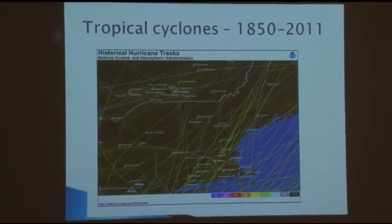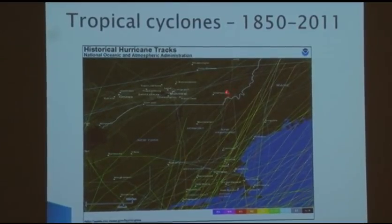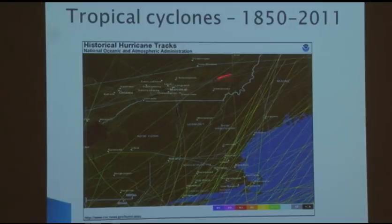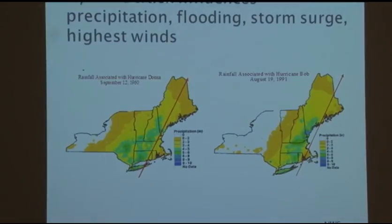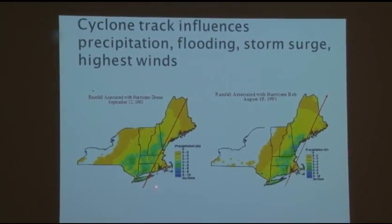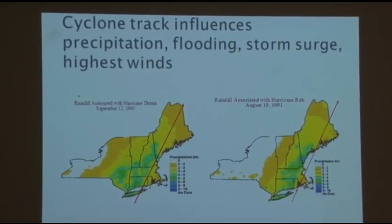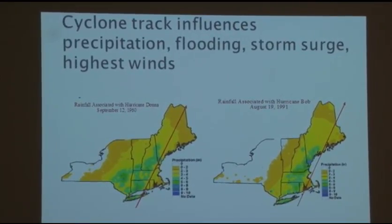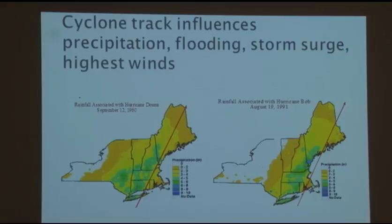Zooming in on Vermont from the 1850s through 2011, a number of events have crisscrossed the state and some tracked to the north, giving us rainfall in both cases. The track taken makes a difference because most of the rain falls on the left-hand side of the track. For something like Hurricane Donna, which had a more land-based track, there was precipitation inland. For something like Bob, which had a more coastal track, there was less precipitation in inland regions. Track makes a big difference.